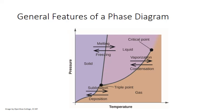So along the line between solid and liquid, the temperature and pressure combinations actually represent a series of melting or freezing points for that substance.